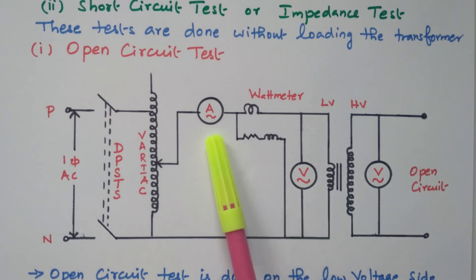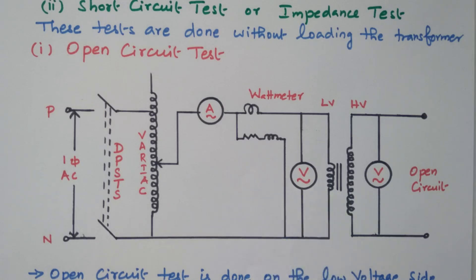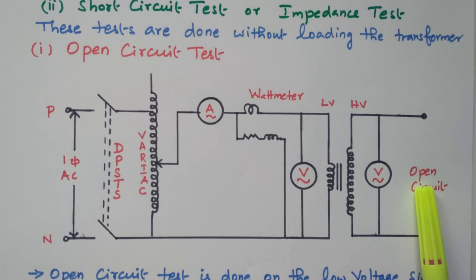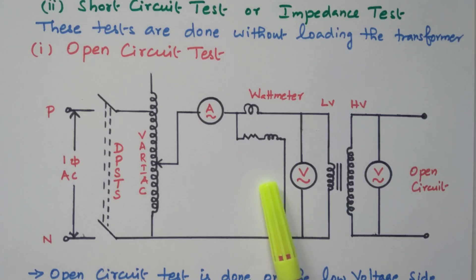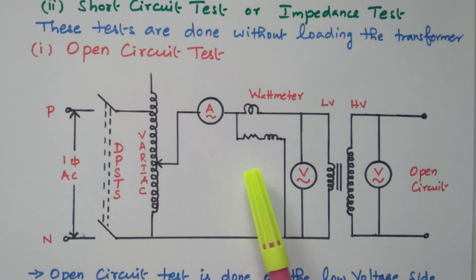The ammeter measures the no load current, the voltmeter measures the primary rated voltage, and the wattmeter measures the no load input power given to the primary. Since there is no load, the current flowing is very small, so we can neglect the copper loss. The power given to the primary winding refers only to the iron loss — there is no copper loss because only a negligible amount of current flows through the winding. The wattmeter reading therefore represents the iron loss of the transformer.